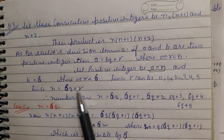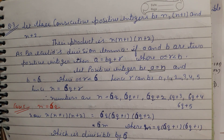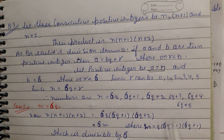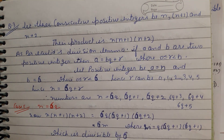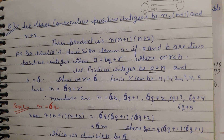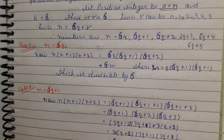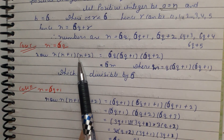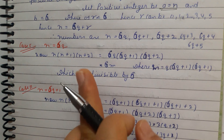We need to check all 6 remainders. Since there are 6 cases total, I will explain 3 cases here. Case 1: when n = 6q. Then the three numbers are 6q, 6q+1, 6q+2. Here 6q is a multiple of 6, so the product is divisible by 6. Case 2: when n = 6q+1. Then the three numbers are 6q+1, 6q+2, 6q+3.